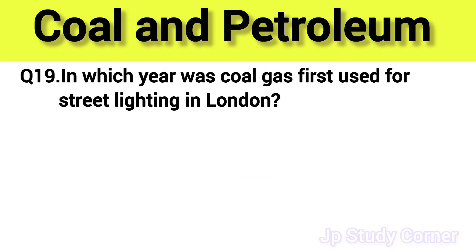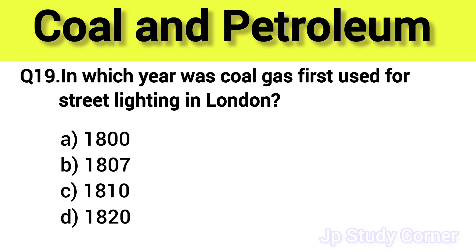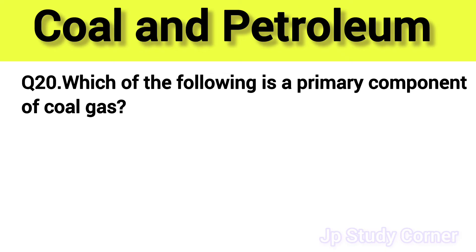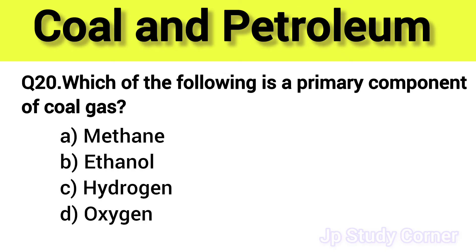Question number nineteen: which year was coal gas first used for street lighting in London? The right answer is option C — year 1810. Question number twenty: which of the following is the primary component of coal gas? The right answer is option A — methane.